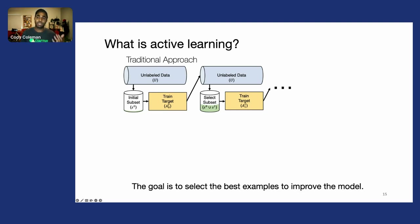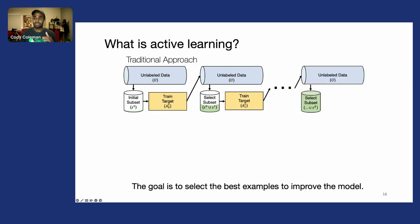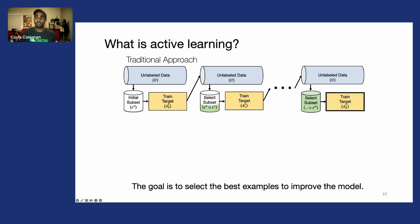We continue this process until we've exhausted some labeling criteria or other constraints, at which point we train the model one last time on all of the data we've collected.